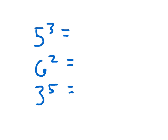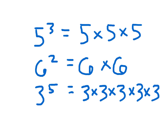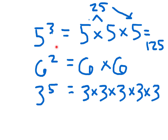Let me write these out. That's 5 cubed — 5 multiplied together 3 times. And then 6 squared: 6 multiplied together twice, that's 6 times 6. And 3 to the 4th — how many times? 4 times. If we evaluate 5 cubed, which is 5 times 5 times 5: 5 times 5 equals 25, times 5 again equals 125. So 5 cubed, or 5 to the 3rd power, equals 125.